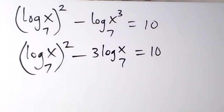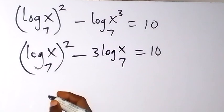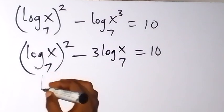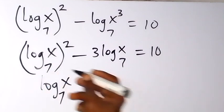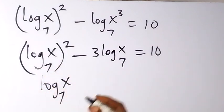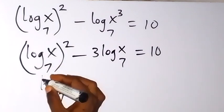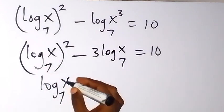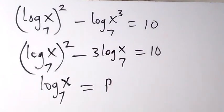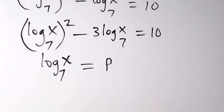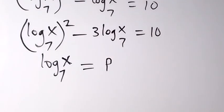Now something interesting is here: we have log(x base 7) appearing twice. So let's represent it with a letter. Let p = log(x base 7), so that when we write the equation we now have p squared.